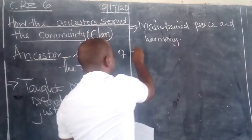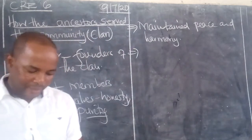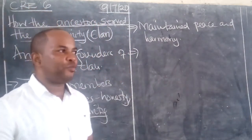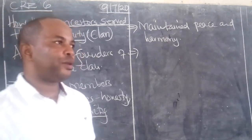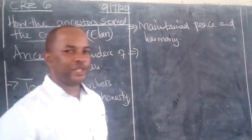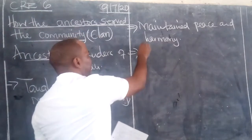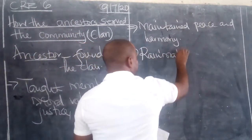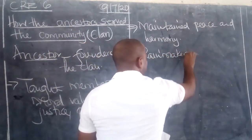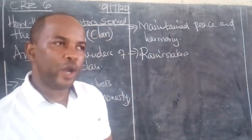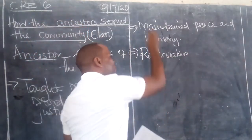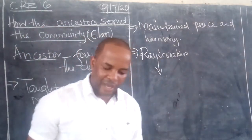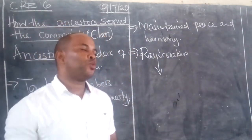Number three: the ancestors used their individual talents for the well-being of their community. When we talk about using individual talents, we had people like rainmakers. Rainmakers were called upon by the entire community to help, especially when it did not rain for a long time.